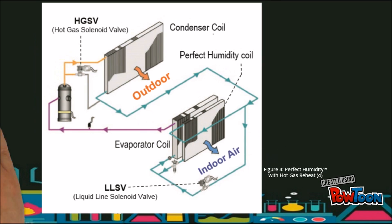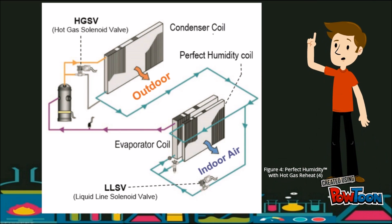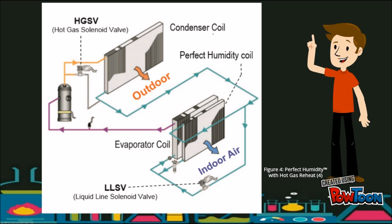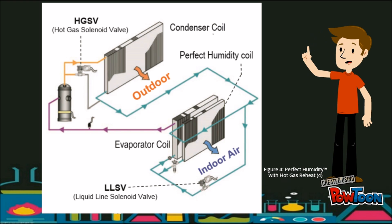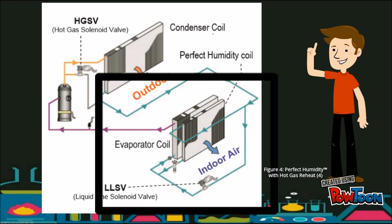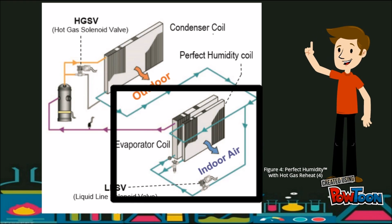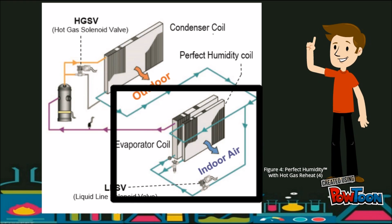When room temperature and humidity are above set point, sub-cooling mode will turn on, calling for cooling and dehumidification. In this mode, the liquid refrigerant leaves the condenser and is routed through the perfect humidity coil.